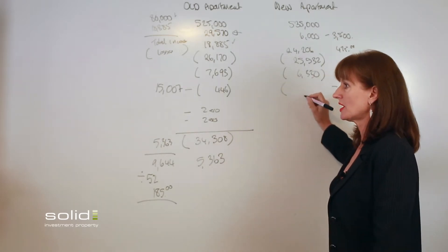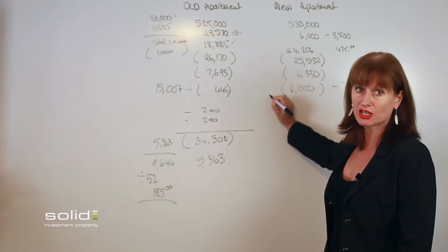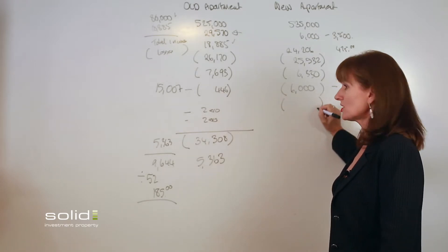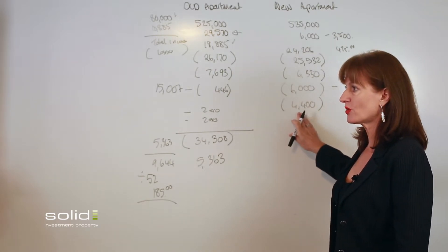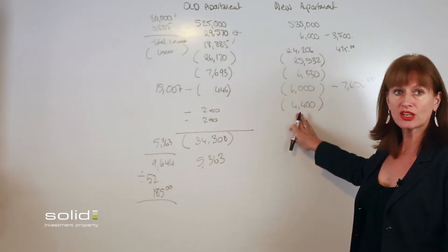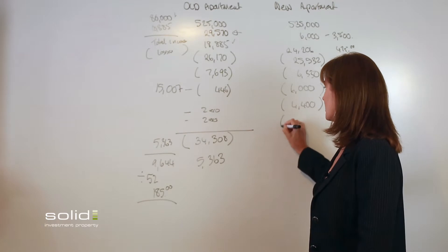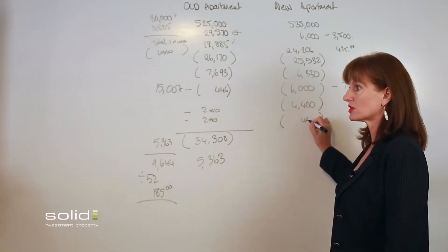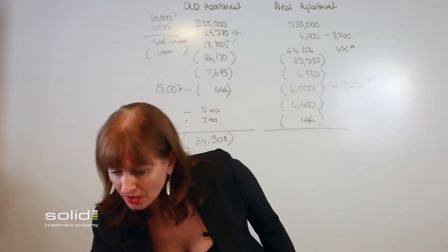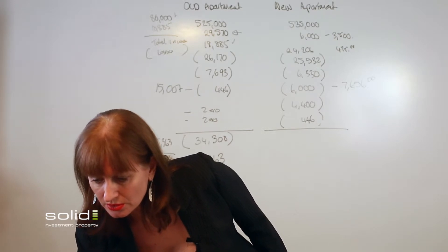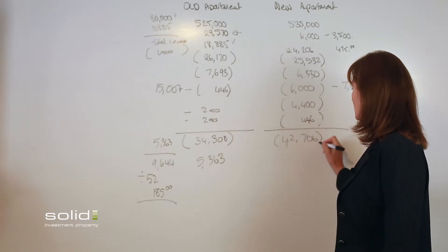Now because we do get the depreciation, we actually get to write off $6,000 for 40 years of the property's life. And the section 43, which is your fixtures and fittings, this one here is cumulative—it's $4,400 in the first year, it's $3,800 in the second year, it's $3,300 in the third year, so that does go down. And once again, we get to write off our loan costs, which are almost identical. So here we've amassed losses that come to $42,000.